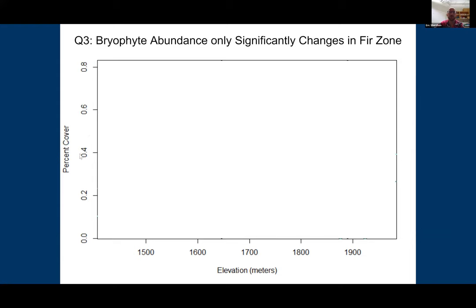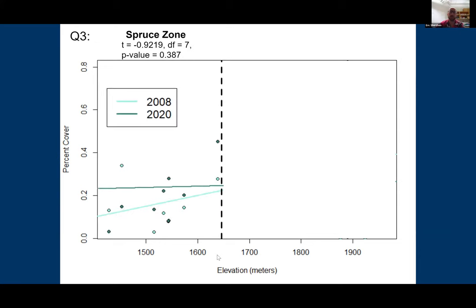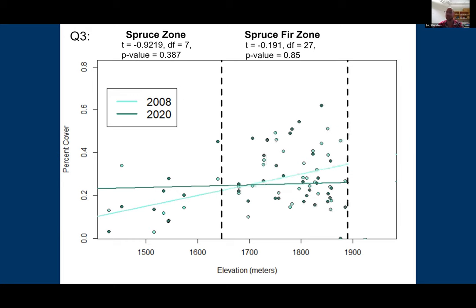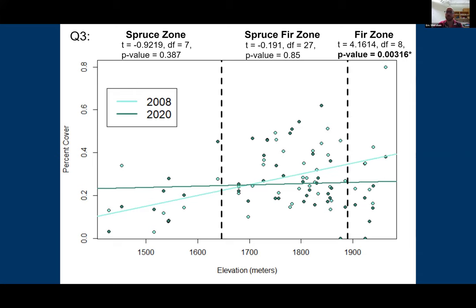Looking at bryophyte abundance — percent cover of transect lines covered by bryophytes — in the spruce zone there was no significant difference in abundance between the two time points. The same was true for the spruce-fir zone. However, at the highest elevations in the fir zone, there was a significant decline in percent cover between the two time points.